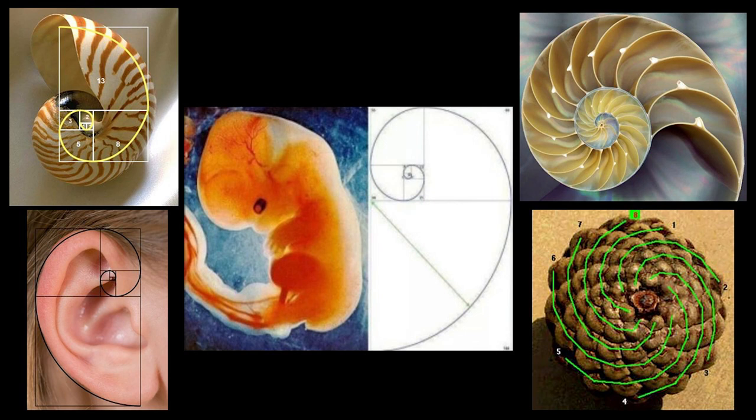Galileo once said a long time ago, learn math, because that's the language in which the gods have written the universe. So it's rather uncanny that this golden ratio occurs in a variety of places in math — for instance, in the way nature unfolds, in the growth patterns of sunflower seeds, or the patterns of the walls in a pine cone, or in the nautilus, or even the growth of the human fetus, and so on.